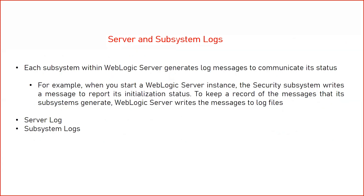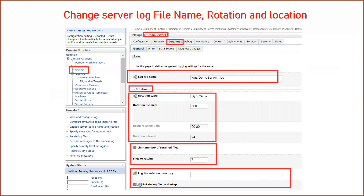Apart from the server log file, we have subsystem log files. In WebLogic Server, apart from admin and managed servers, we configure different kinds of resources such as data sources, JMS, and deployed applications — all of these are called subsystems. All subsystems also write logs to the log file. For example, during a deployment or data source initialization at managed server startup, all related content and status logs are written to your server log files.